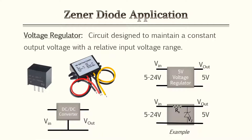The Zener diode application: in the reverse bias condition it acts as a voltage regulator. A voltage regulator is a circuit designed to maintain a constant output voltage with a varying input voltage. For example, this mimics a DC-DC converter — just in a more simplistic manner. A DC-DC converter for a car goes from 12 volts to 5 volts. A Zener diode does the same application — it just takes a higher voltage and steps it down to a lower voltage.